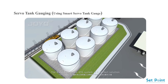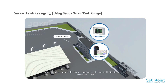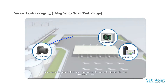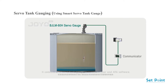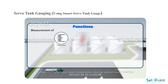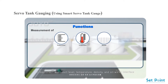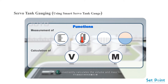The BJLM ADH servo ATG system is a perfect solution developed to meet all those requirements for bulk liquid storage. It consists of a servo tank gauge, a communicator, and ATG software. It measures product level, temperature, density, and oil-water interface, and conveniently calculates the volume and mass.